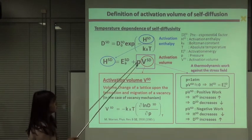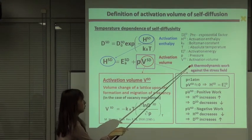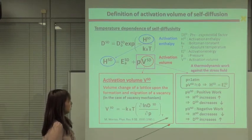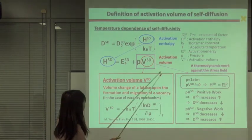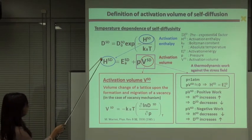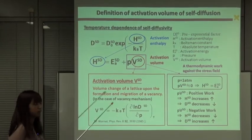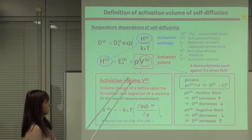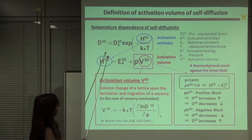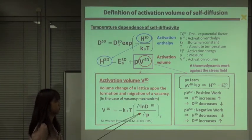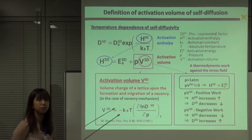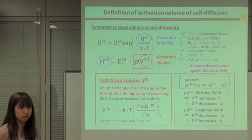And this term PV^SD is the thermodynamic work of the lattice against the stress field when the vacancy forms and migrates. Under atmospheric pressure, this term is negligibly small compared to activation energy, so activation enthalpy becomes activation energy. However, we have biaxial stress on the samples, so this term cannot be neglected. And when the work is a positive work, the activation enthalpy increases. As a result, the self-diffusivity decreases. When it's a negative work, then the opposite occurs. So it can be a positive or negative work, depending on which kind of strain the lattice has.